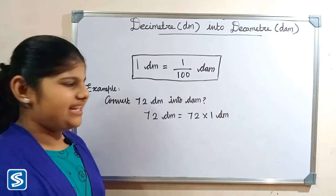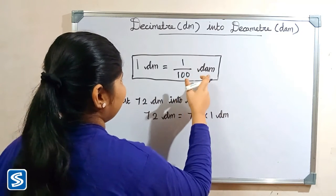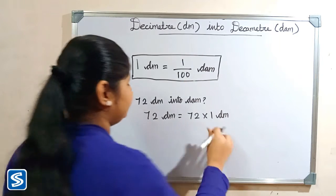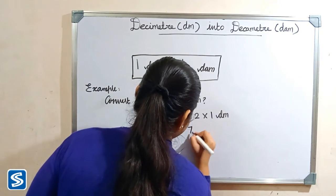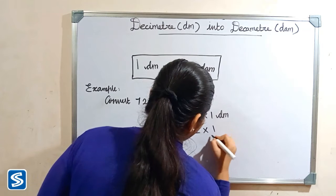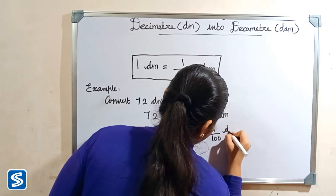So now we have to substitute 1 by 100 decameter in the place of 1 decimeter. So 72 multiply 1 by 100 decameter.